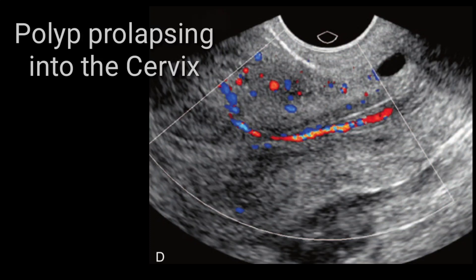On this transvaginal scan again, polyps can be seen coming all the way down from the endometrial canal and protruding into the cervical canal. If you see such a case for the first time it will be difficult, but gradually, as you review these images, you will be able to recognize prolapsing polyps in the future. These images play a vital role, so keep watching and get your eyes familiarized with how prolapsing polyps look on ultrasound imaging.